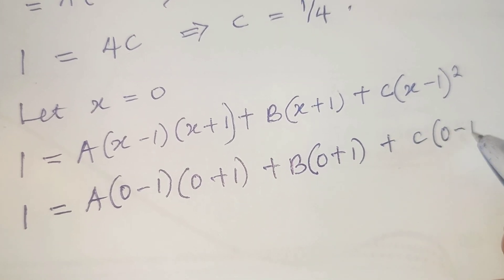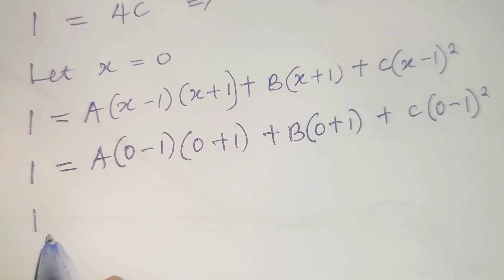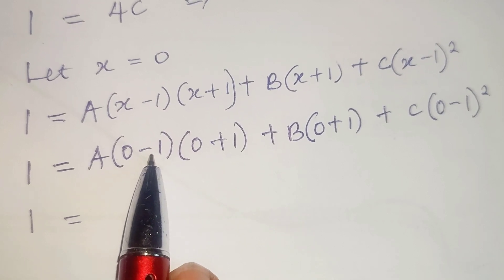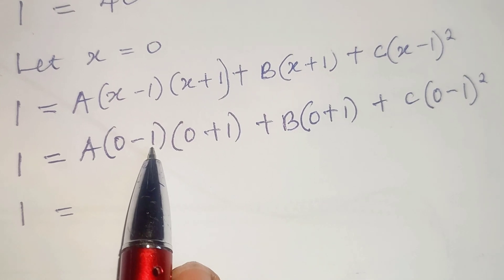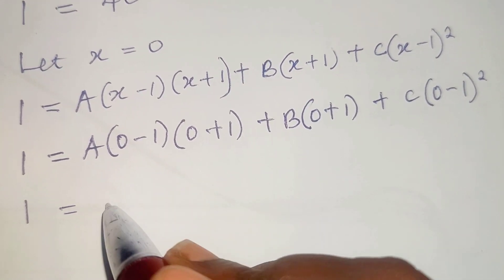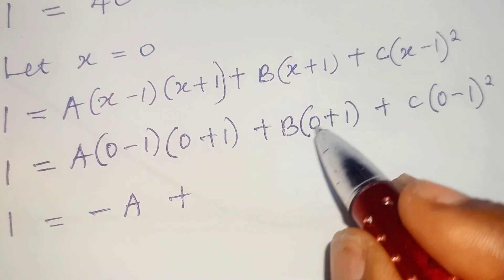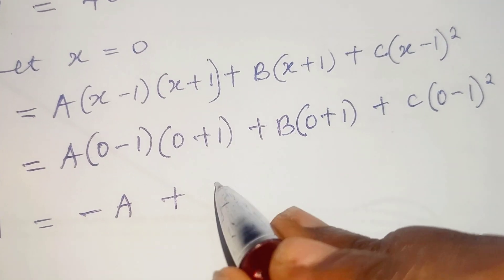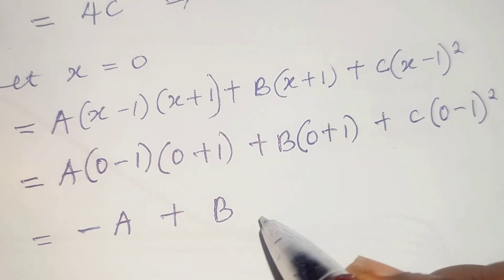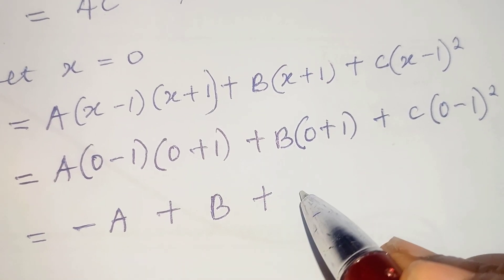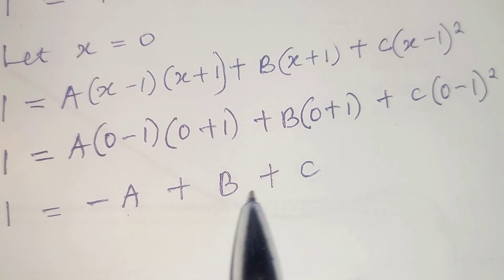Evaluating with x equals 0: (0 minus 1) is minus 1, (0 plus 1) is 1, so the A term gives minus A. The B term gives 1 times B, which is B. The C term gives (minus 1) squared times C, which is C. So we have 1 equals minus A plus B plus C.